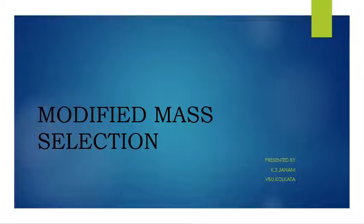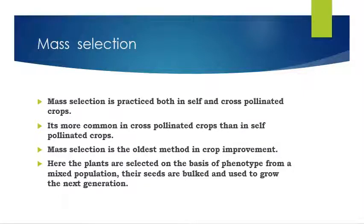Hello everyone, today we are going to see the topic modified mass selection. Mass selection is the selection process in which the plants are selected on the basis of the phenotype from a mixed population and their seeds are bulked together and used to grow the next generation.